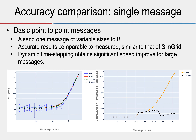The first benchmark is a single message: a basic point-to-point message from node A to node B. Our simulation provides accurate results comparable to the measured results and obtains similar results to SimGrid. We can see that dynamic time stepping achieves significant speed improvement for large messages.